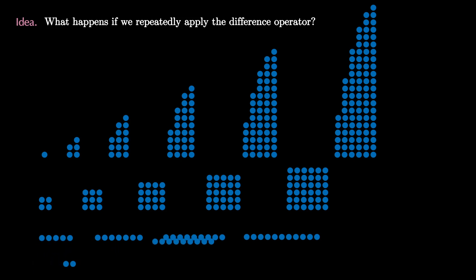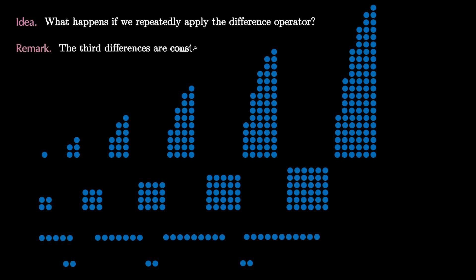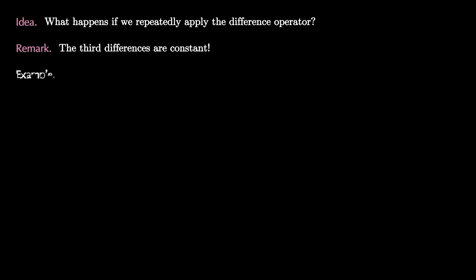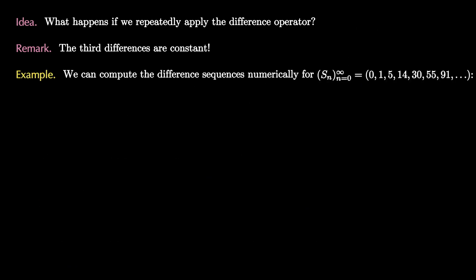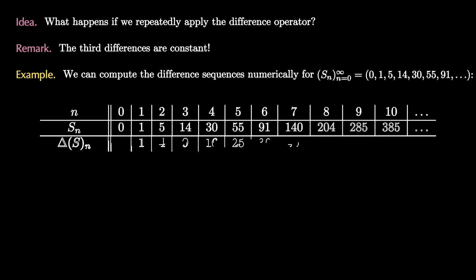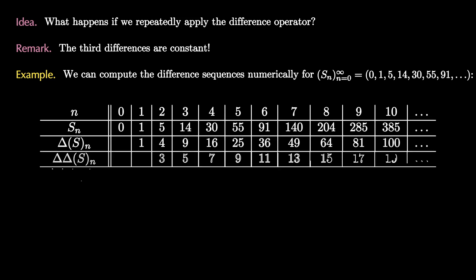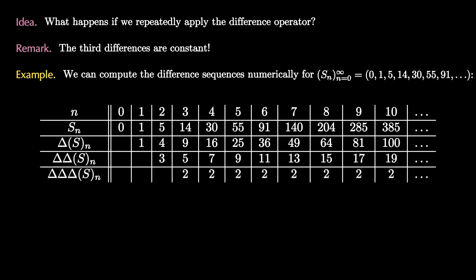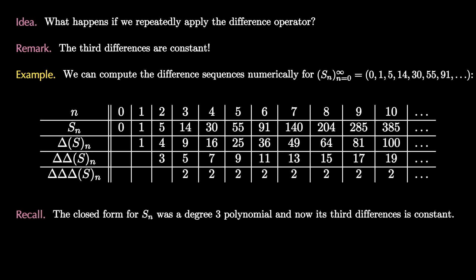Finally, repeating the first differences one more time gives something striking: the first differences of that sequence is a constant sequence. So after applying the difference operator three times, we get a constant. We can also do this numerically: take the sequence 0, 1, 5, 14, 30, 55, and fill in a table with first, second, and third differences. The third differences are indeed constant — always 2. Each entry in the table is the difference of the entry directly above and the entry above-left.